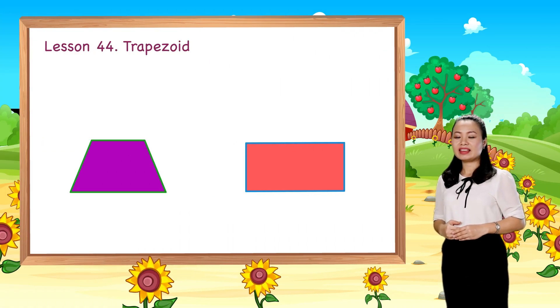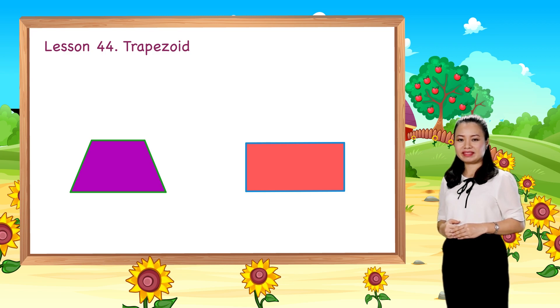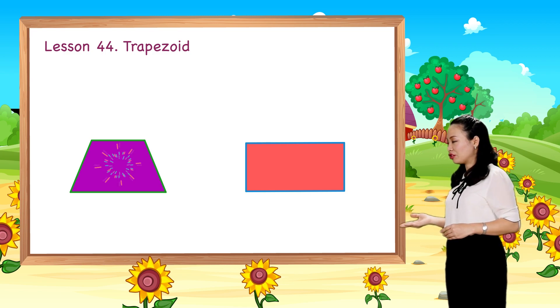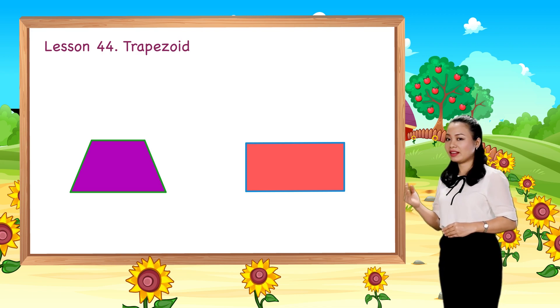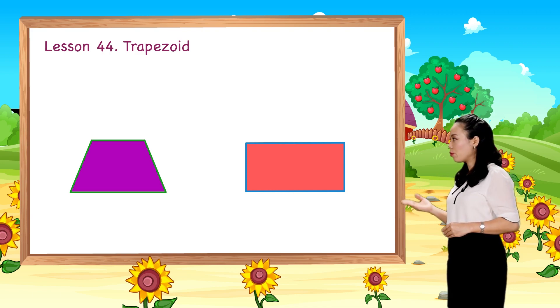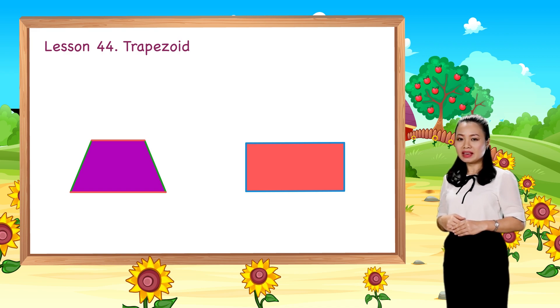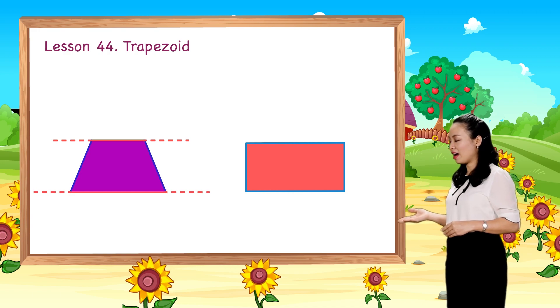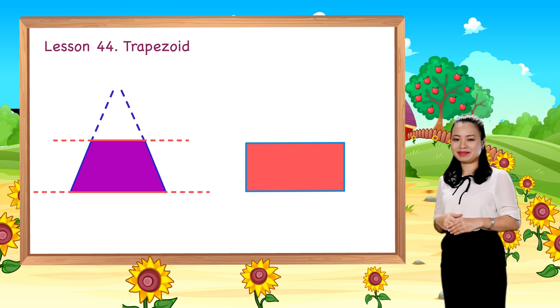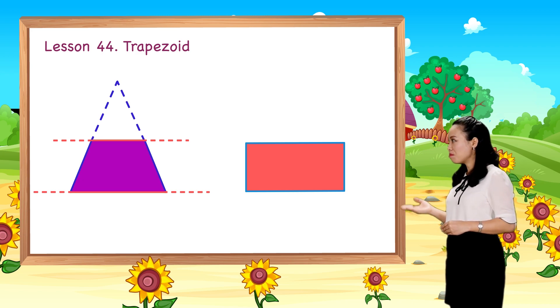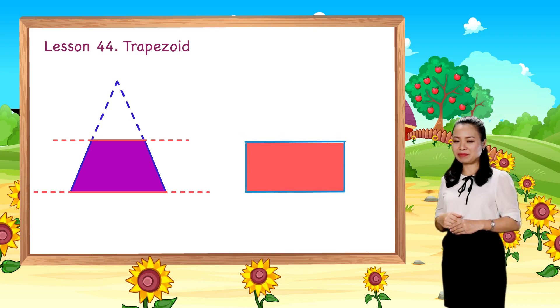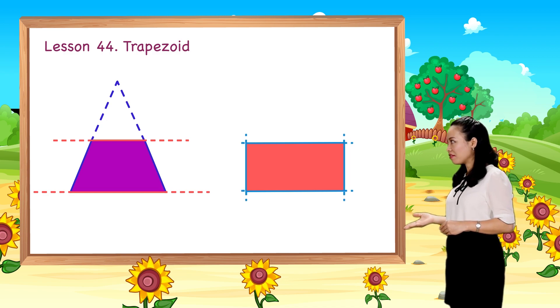Now, the last question. How are the trapezoid and rectangle different? The trapezoid has one pair of opposite sides being parallel and the other pair not parallel. The rectangle has both pairs of opposite sides being parallel.